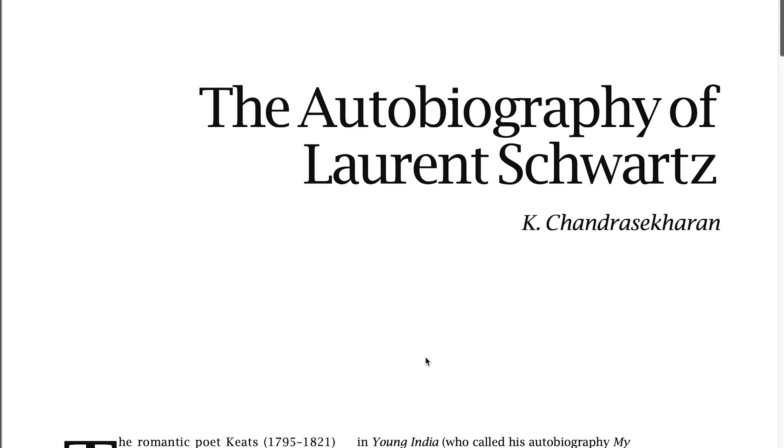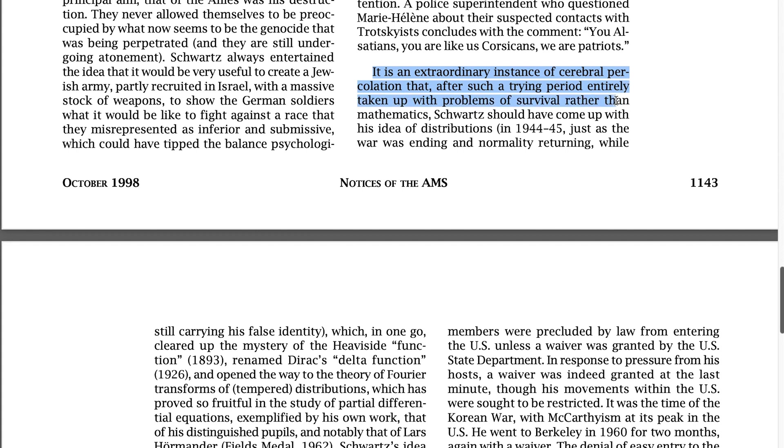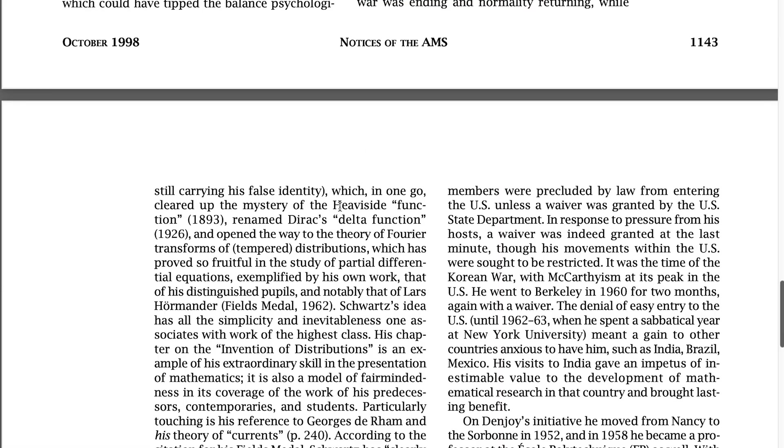So I found this one review in the AMS notices. It is an extraordinary instance of cerebral percolation that after such a trying period, entirely taken up with problems of survival rather than mathematics, Schwartz should have come up with his ideas of distributions. That was around 1944 to 1945, around the end of WWII, which in one go cleared up the mystery of the Heaviside function, renamed Dirac's delta function, and opened the way to the theory of Fourier transforms of tempered distributions. Schwartz's idea had all the simplicity and inevitableness one associates with work of the highest class. So I really can't wait to get a hold of the textbook so I can really dig into all this stuff. Apparently there's an entire chapter on distributions inside of his autobiography that we'll be able to dig into.